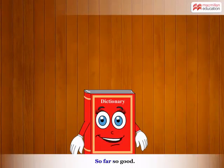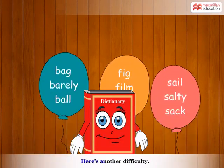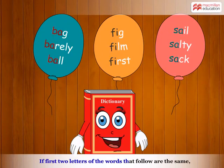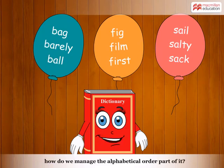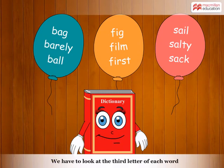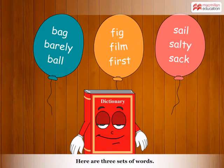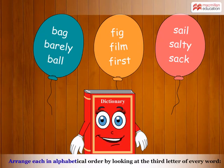So far, so good. Here's another difficulty. If the first two letters of the words that follow are the same, how do we manage the alphabetical order part of it? We have to look at the third letter of each word and then put the words in alphabetical order. Here are three sets of words. Arrange each in alphabetical order by looking at the third letter of every word.